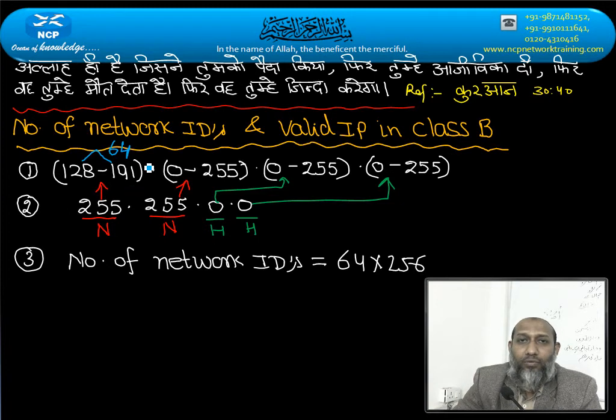If you will count, 128, 129, 130, 131. How many combinations are there? 64. And from zero to 255 is 256. Okay?